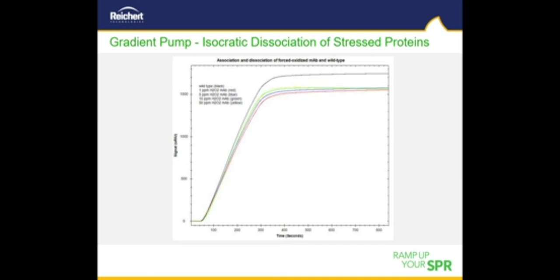Here we see traditional SPR injections with an isocratic buffer. For antibody characterization, a microcolumn was filled with MabSelect agarose suspended in PBS, and MabSelect protein was amine coupled to it. The running buffer was pH 7.4 PBST. Wild-type antibody and oxidized antibodies were injected at a concentration of 100 micrograms per mL each with a contact time of 8 minutes. These overlays are all very similar — only the wild-type antibody had a somewhat larger binding response compared to the samples oxidized with peroxide, making it virtually impossible to differentiate between the different states of oxidation.